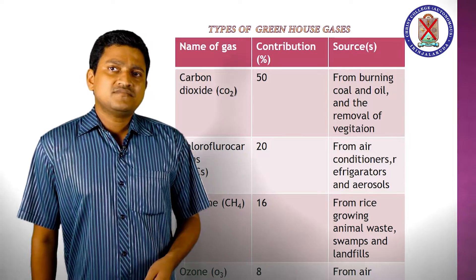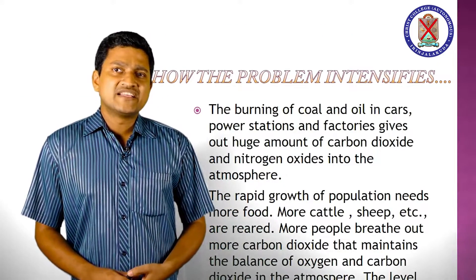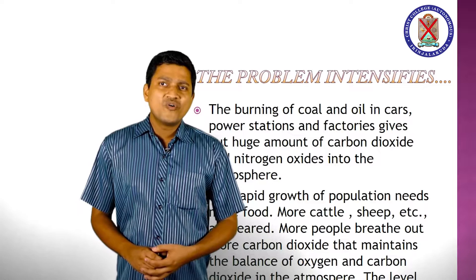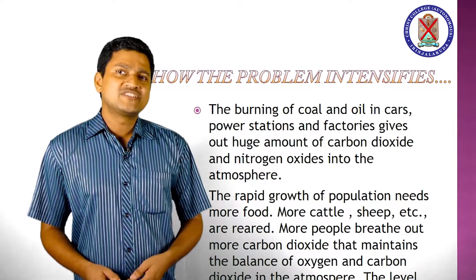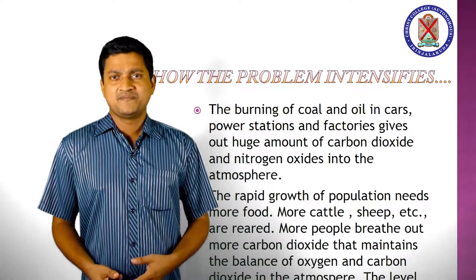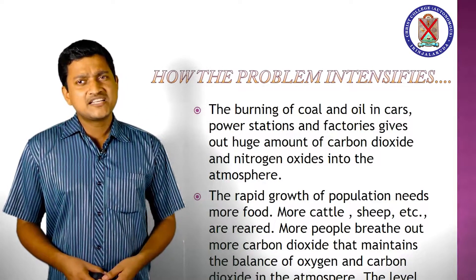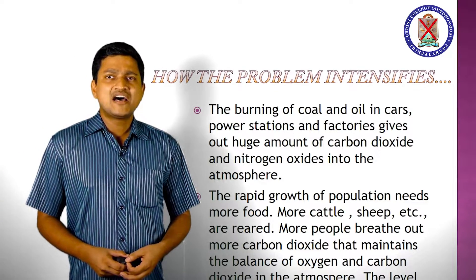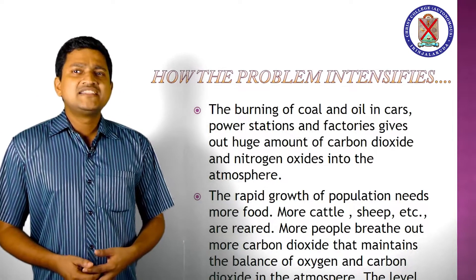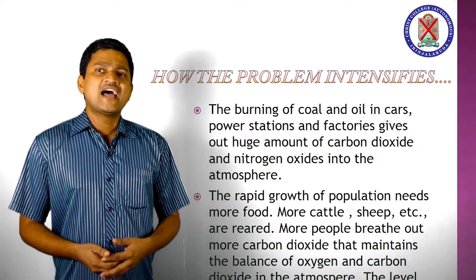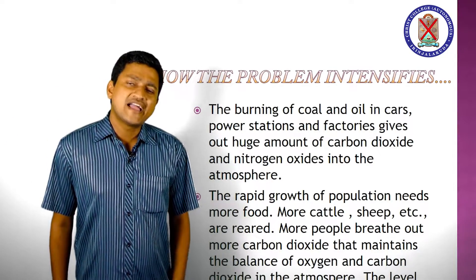Next is how the problem intensifies — that means how the greenhouse effect increases. The burning of coal and oil in cars, power stations, and factories releases huge amounts of carbon dioxide and nitrogen oxide into the atmosphere. The rapid growth of population requires more food, more cattle, and more sheep. More people breathe out more carbon dioxide, affecting the balance of oxygen and carbon dioxide in the atmosphere. The level of carbon dioxide increases due to these activities.